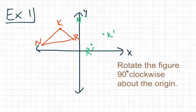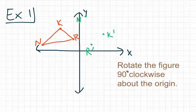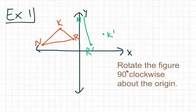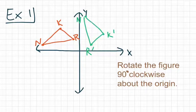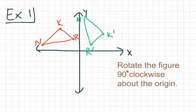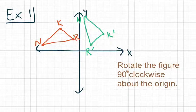So N prime is going to end up up here. Then once we've got our points drawn, go ahead and connect our lines. And we see how triangle K prime, R prime, N prime is a rotation of triangle K, R, N.